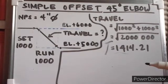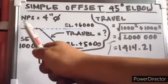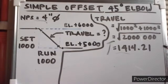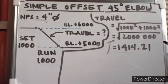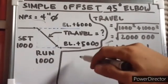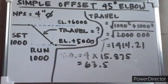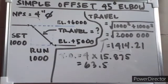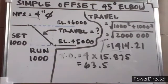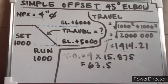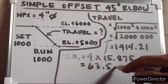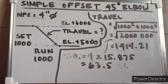Since we have a nominal pipe size, from this example we are going to get the takeoff of the 45 degree elbow based on the diameter. 15.875 is our constant for a 45 degree elbow. So 15.875 multiplied by 4 is equal to 63.5. This will be the takeoff of a 4-inch diameter pipe elbow. We are going to multiply it by 2 because we have 2 elbows. 63.5 times 2 is equal to 127.